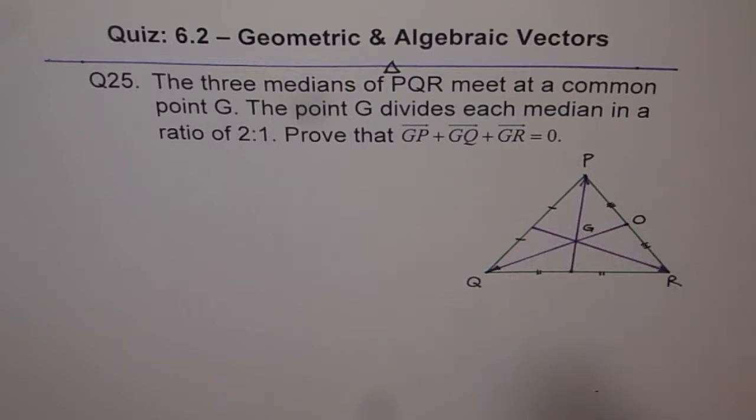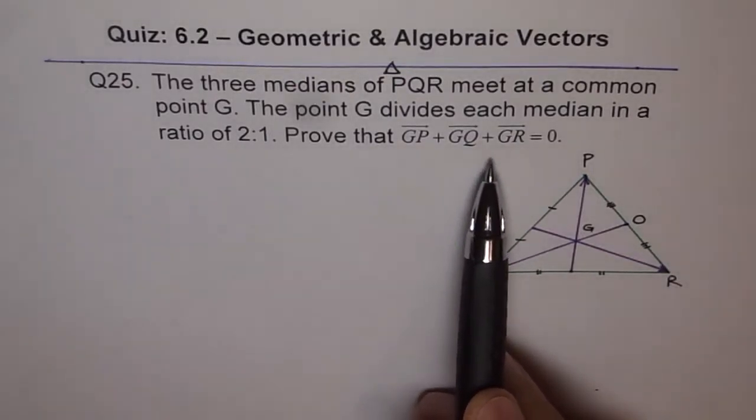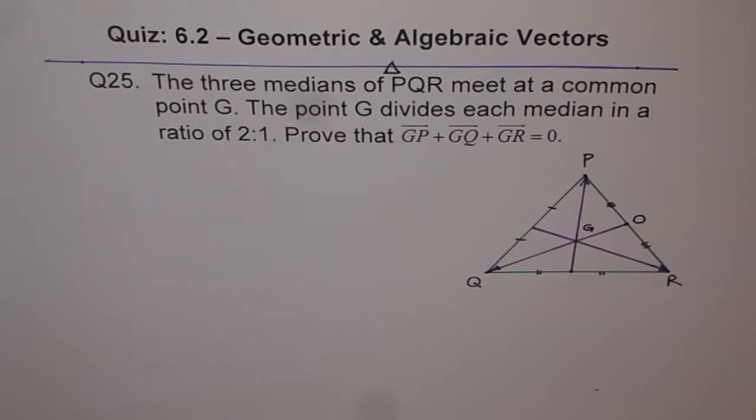Prove that GP plus GQ plus GR equals to 0. So let's read the problem once again and see with reference to our sketch.